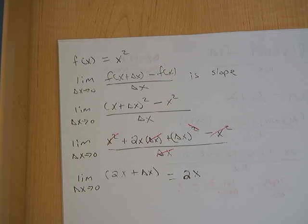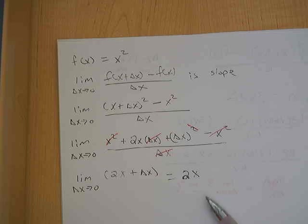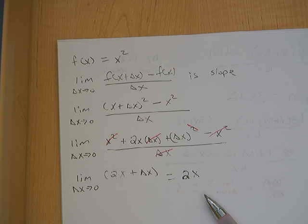2x. Just stop right there. We have just found out that the slope of the tangent line to the function x squared is 2x. Now, you're probably saying, well, wait a minute. How can the slope be 2x? Slope should be a number. Right?